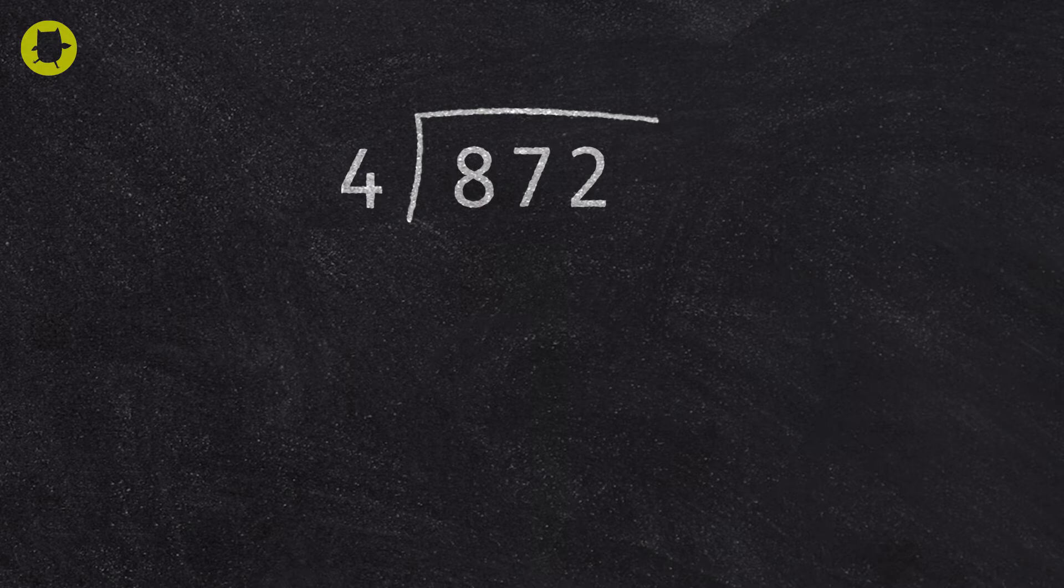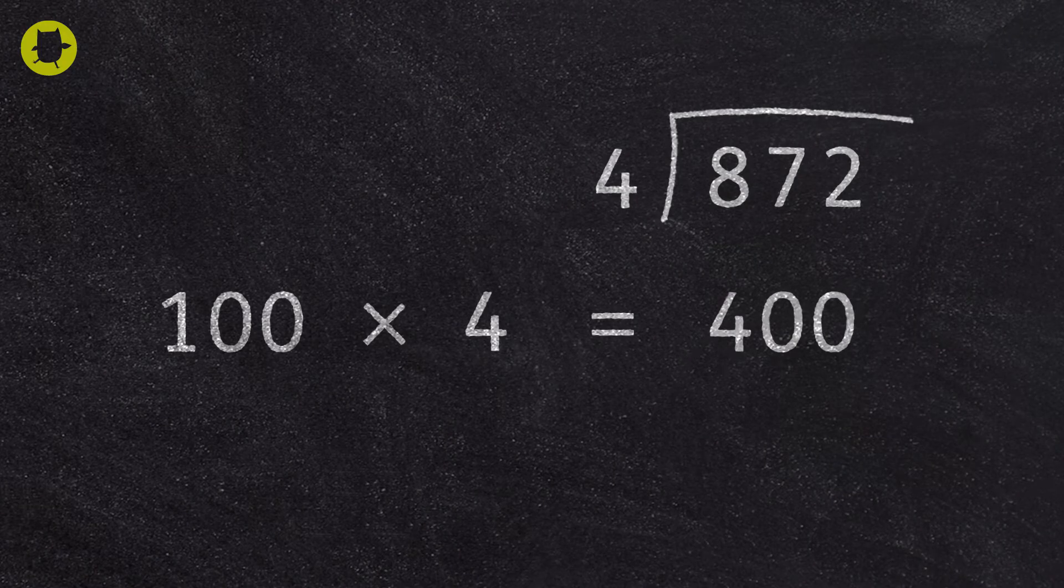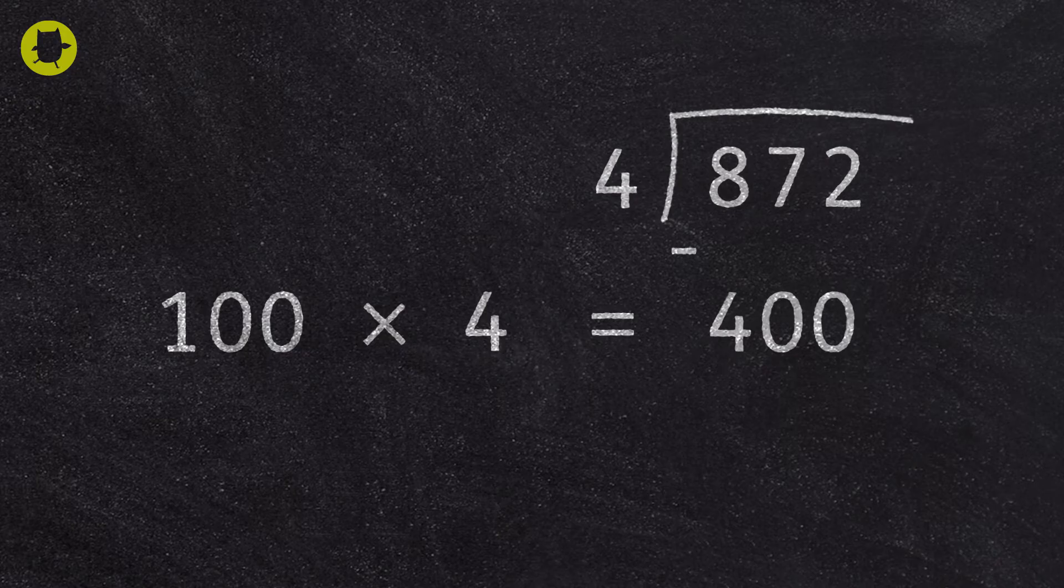If we look at 100 multiplied by 4, we know that this is 400. We then subtract the 400 from 872, which gives us 472.